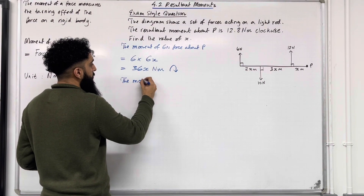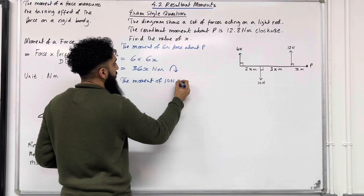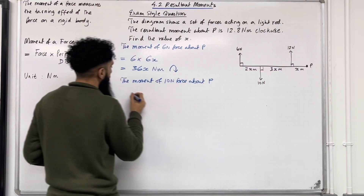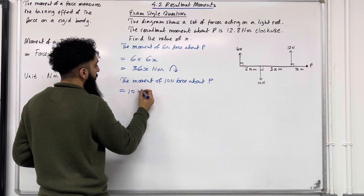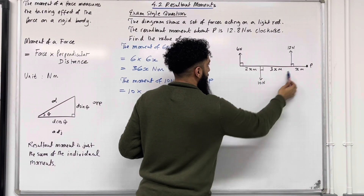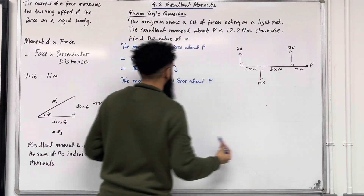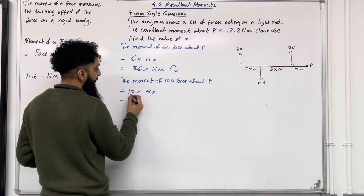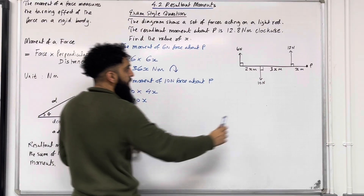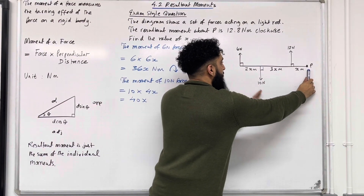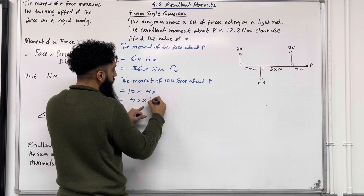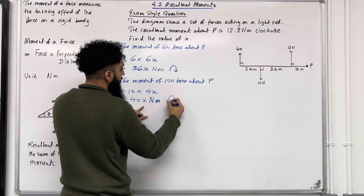Moving on to the 10 newton force: the moment of the 10 newton force about P equals 10 multiplied by the perpendicular distance from P, which is x plus 3x, giving 4x. So 10 times 4x is 40x Newton meters. If I hold on to point P and apply the 10 newton force, it takes the entire body anti-clockwise. So we have 40x Newton meters going anti-clockwise.